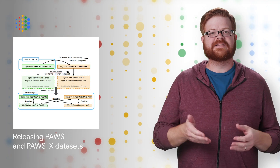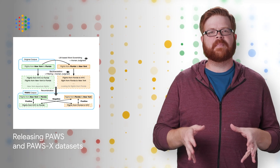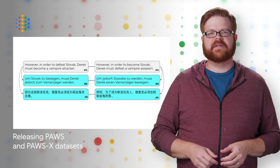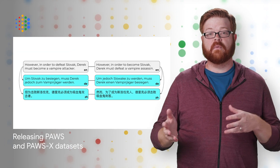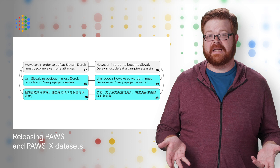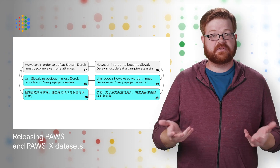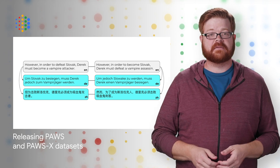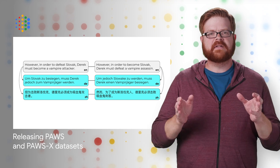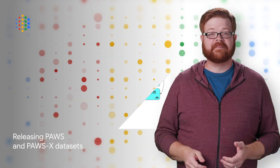Word order and syntactic structure have a large impact on sentence meaning. The task of identifying whether sentences with high word overlap actually have the same meaning is important to many real-world natural language understanding applications. To address this, we're releasing two new datasets for use in the research community.